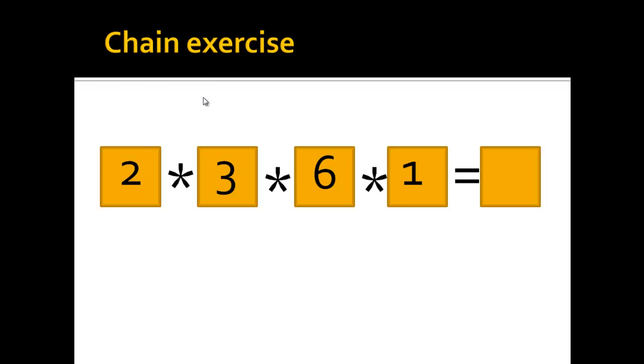Chain exercises can also be done with multiplications, so 2 times 3 is 6, times 6 is 36, times 1 stays 36, so the result is 36.